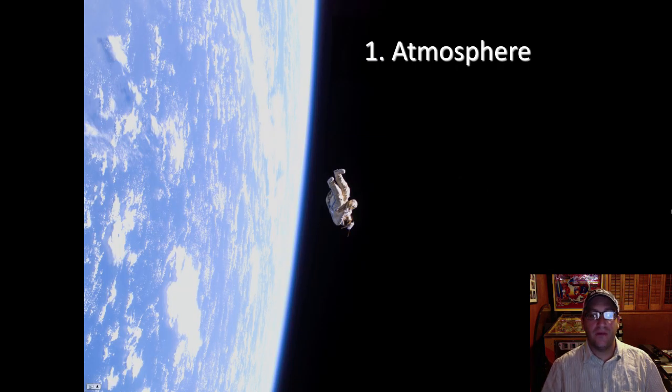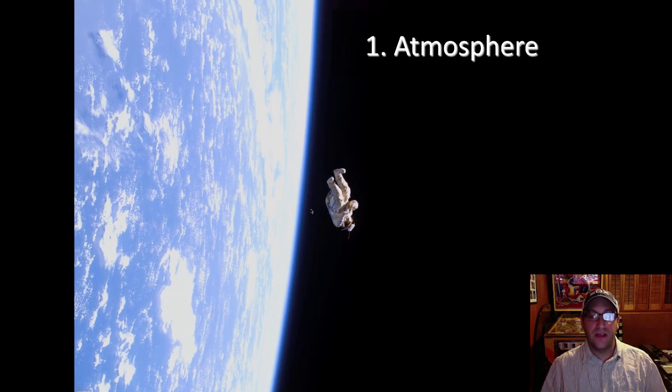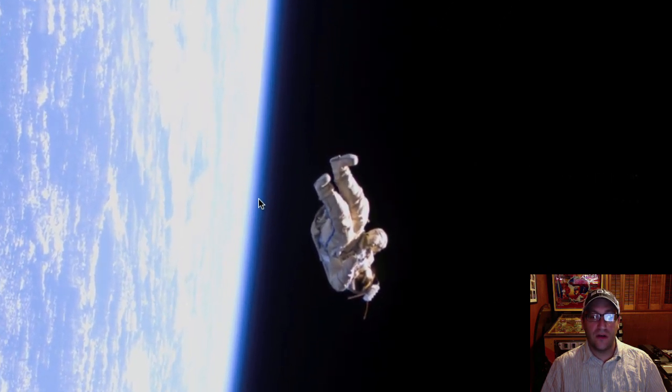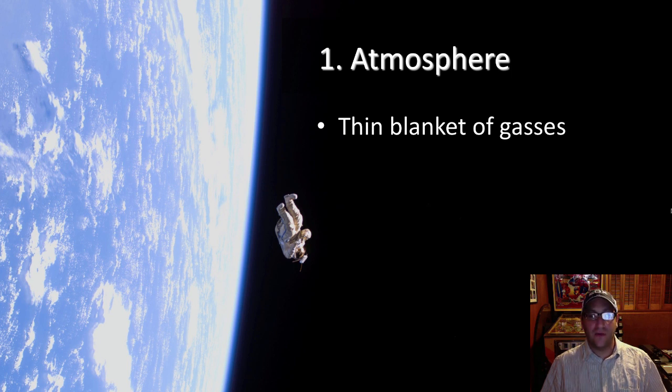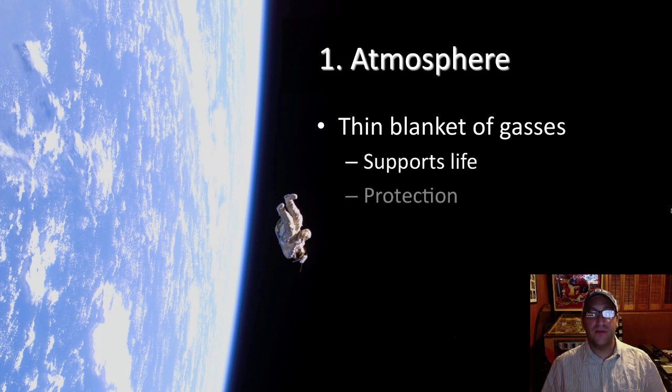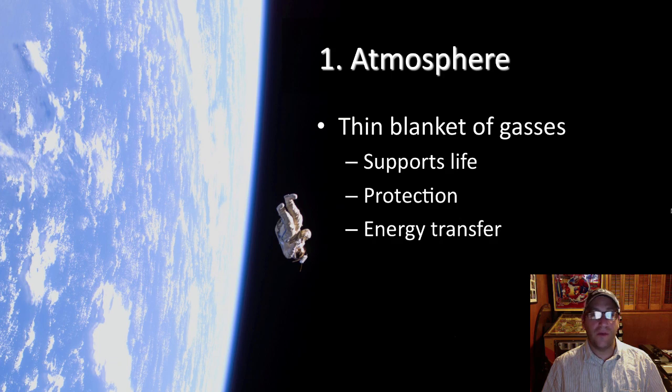Let's talk about the atmosphere. As you can't see it, let's zoom in on this portion right here. It's that thin blue haze that starts at the earth and fades out into space. It's a thin blanket of gases that surrounds our planet, and there's really three reasons why it's important. First, it supports all life on the planet. It also provides protection from the sun and things that would otherwise hit the planet. Lastly, it's a source of energy transfer for our planet. It helps keep us warm and cool.